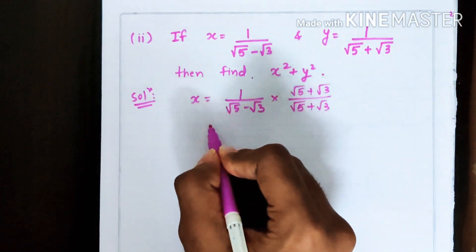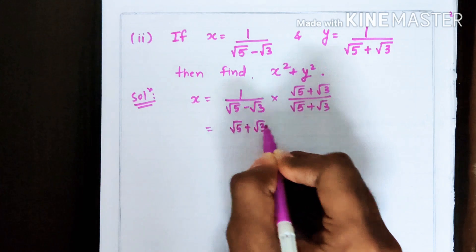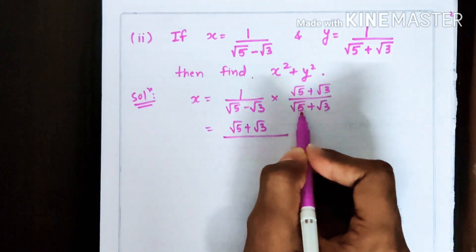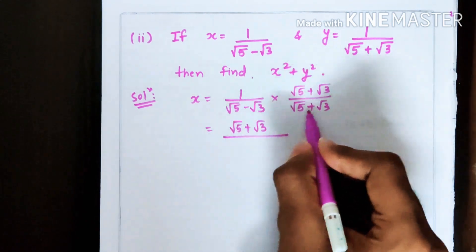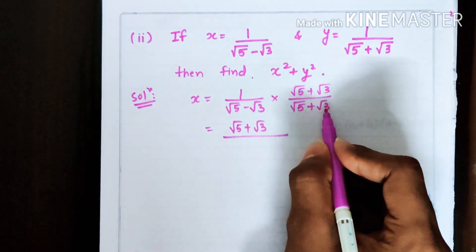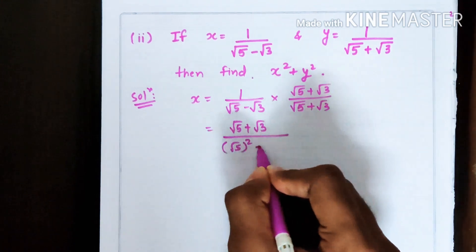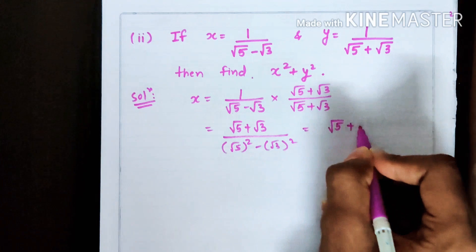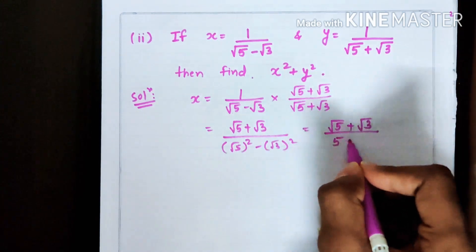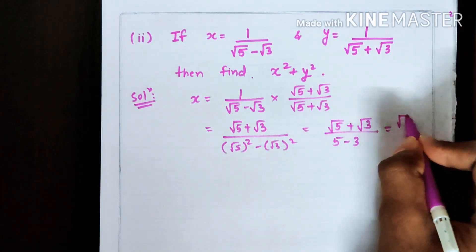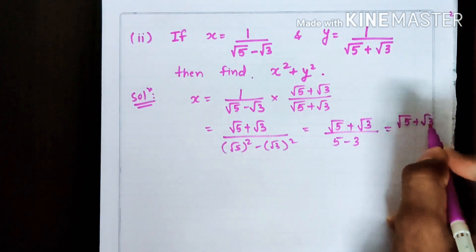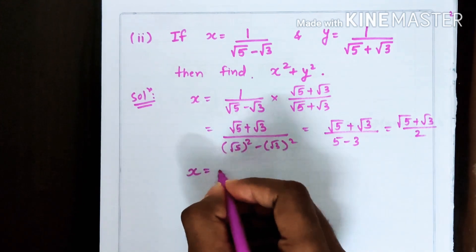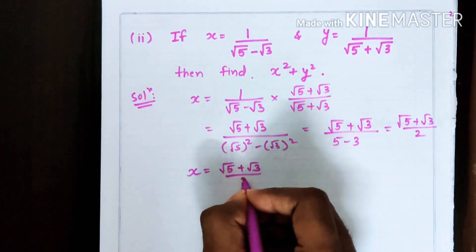The rationalizing factor for x is (√5 + √3). So the numerator becomes (√5 + √3). In the denominator we apply the identity A² − B², giving √5² − √3² = 5 − 3 = 2. So our answer is (√5 + √3) upon 2. Therefore x = (√5 + √3) / 2.